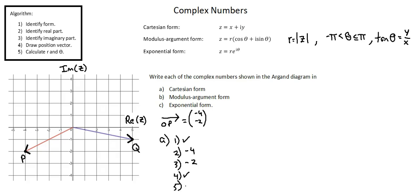Step 5 doesn't apply in the case of Cartesian form. So we can simply go up to the general form of Cartesian form, z equals x plus iy, and use the real and imaginary parts we've identified.